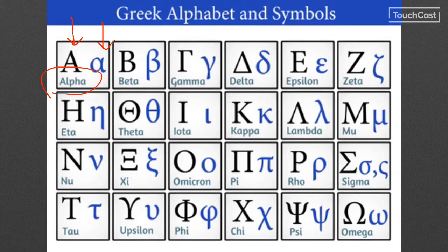You might notice a couple of other things. Take a look at the first two letters in the Greek alphabet — they are alpha and beta. That's actually where we get the word alphabet from: alpha, beta, alphabet.